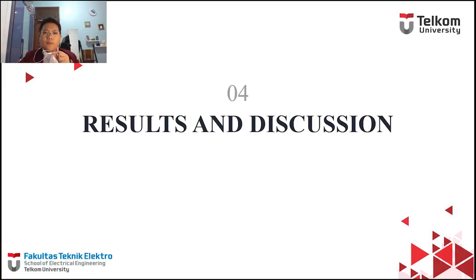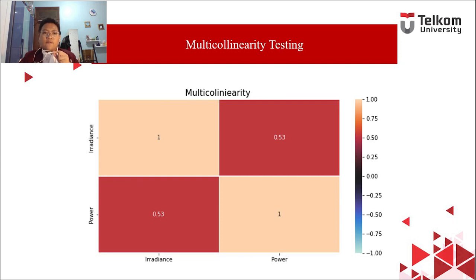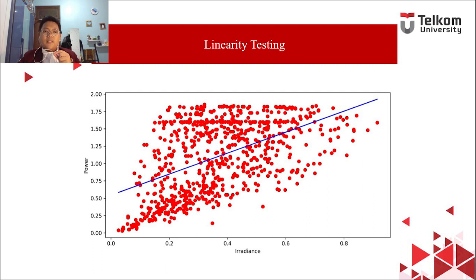For the results, the first thing in our experiments was multicollinearity testing, which served to determine whether PV power output has a correlation with solar irradiation, with one being the highest and minus one being the lowest. The correlation between the two variables was 0.53, which suggests that solar irradiation and power output in PV have a mutually influential correlation. Next is linearity testing, used to determine whether the dependent variable has an effect on the independent variable. In this study, PV power output is dependent and solar irradiation is independent. The graph shows points that tend to rise and are scattered near the diagonal line, confirming a correlation between our two variables.